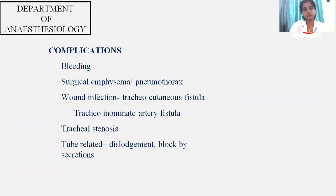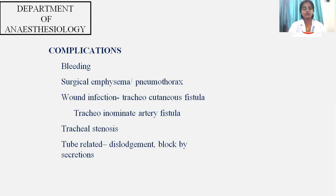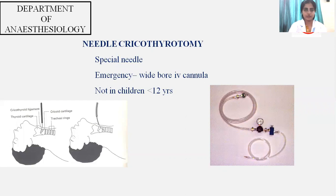Complications of tracheostomy include: bleeding leading to subcutaneous emphysema or pneumothorax; infection that can lead to tracheoesophageal fistula; tracheoinnominate artery fistula; tracheal stenosis; and tube-related complications like displacement or tube blockage. In cases of emergency, the airway can be secured by needle tracheostomy using a special needle — essentially a wide-bore IV cannula — which can be carried out in patients more than 12 years of age.